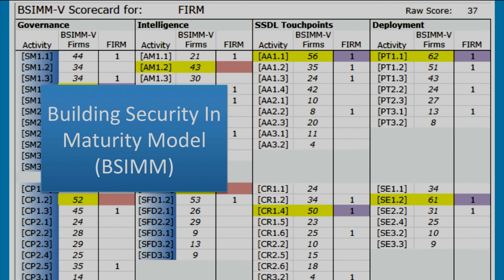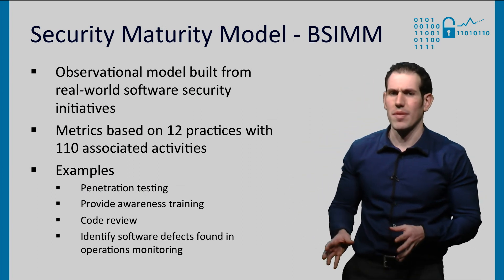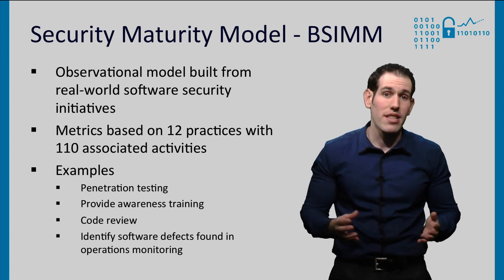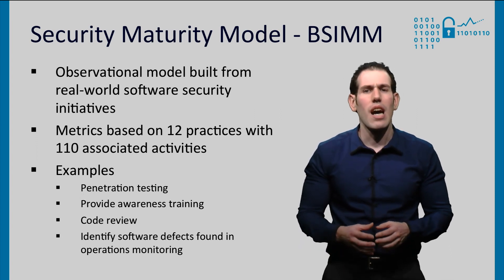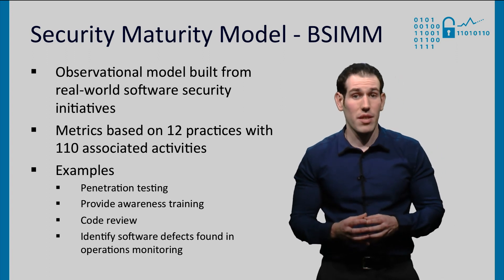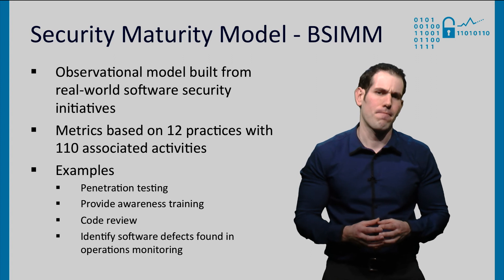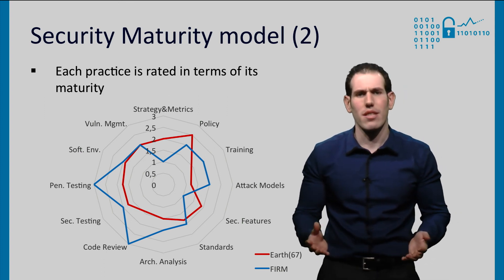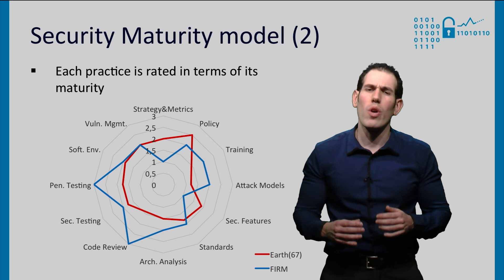Another example of security metrics in practice is the so-called Building Security in Maturity Model. BSIMM is an observational model built from real-world software security initiatives. It defines metrics based on 12 practices with 110 activities, and claims these are associated with developing more secure software. Each activity includes an objective, actions to take, and two or three examples based on actual practice. Activities include such familiar tasks as secure coding, the use of static analysis tools, assurance cases, and attack patterns. An organization can then rate itself on all these activities, resulting in scores for the different practices. By comparing itself with a group of peers, businesses can see areas where they are performing well or where they need to spend more effort.